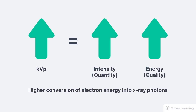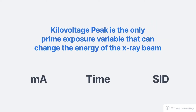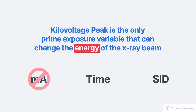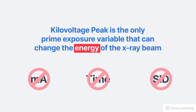This assumes that only the KVP is changing — we're using a fixed technique that is not AEC and no other variables are changing. KVP is unique because it is the only prime exposure factor that can change the energy of the x-ray beam. No other variable can do that. The MA cannot change the energy of the x-ray beam. The exposure time does not change the energy of the x-ray beam. And the distance, or SID, does not change the energy of the x-ray beam. Only the KVP controls the maximum energy of the x-ray beam.